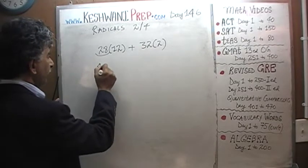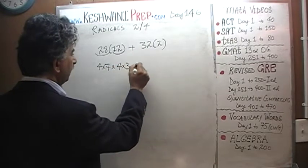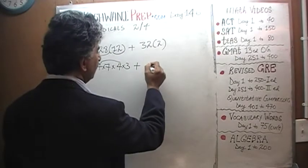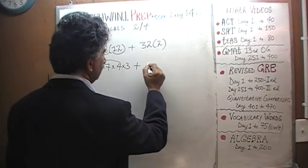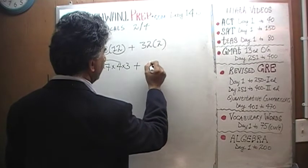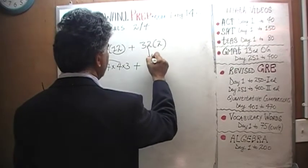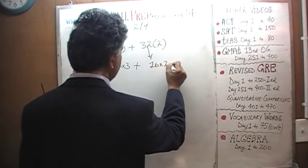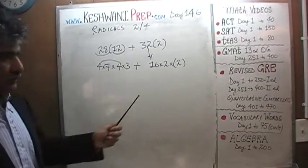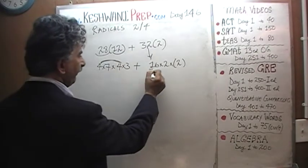The thing to do here is to first break them down into their prime factors. 28 can be written as 4×7, 12 can be written as 4×3. There you go, there is your 16. You see there is your 16, 4×4. And here, 32 can be written as 16×2, and then times 2. The reason I wrote it like this is because we are going to take 16 as our common factor. This and that. Dust out 16 as a common factor.